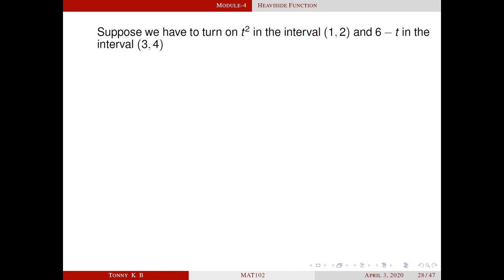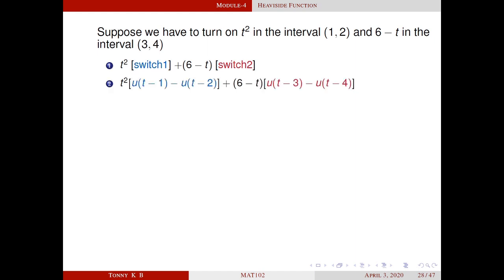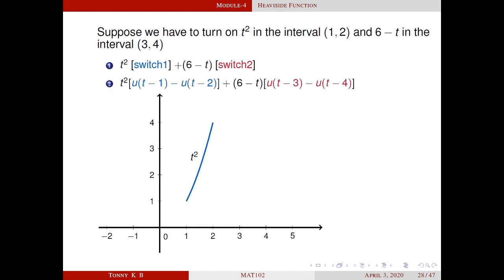Suppose we want to turn on t² in the interval (1, 2) and (6 − t) in the interval (3, 4). This problem involves two switches: t² · switch1 + (6 − t) · switch2. Switch1 is u(t − 1) − u(t − 2) and switch2 is u(t − 3) − u(t − 4). If we plot this function, t² is active only in the interval (1, 2), and (6 − t) is active only in (3, 4), with 0 elsewhere. Similarly, you can turn off and turn on any function in any interval.